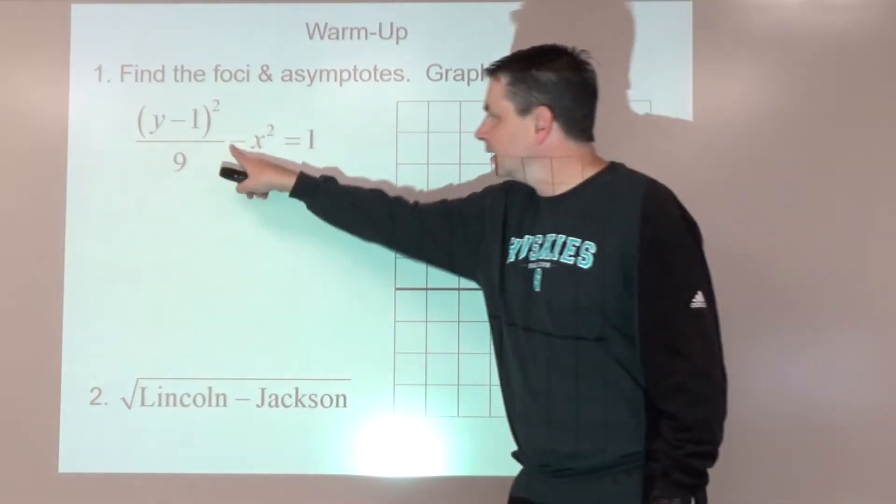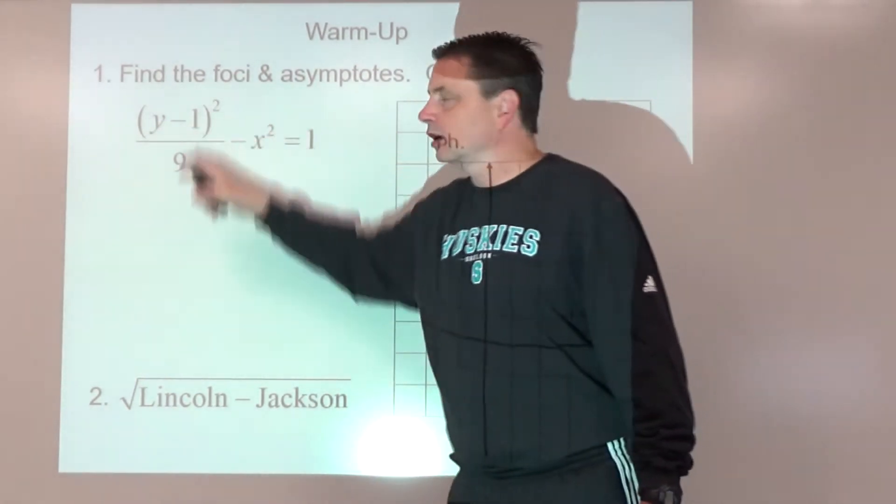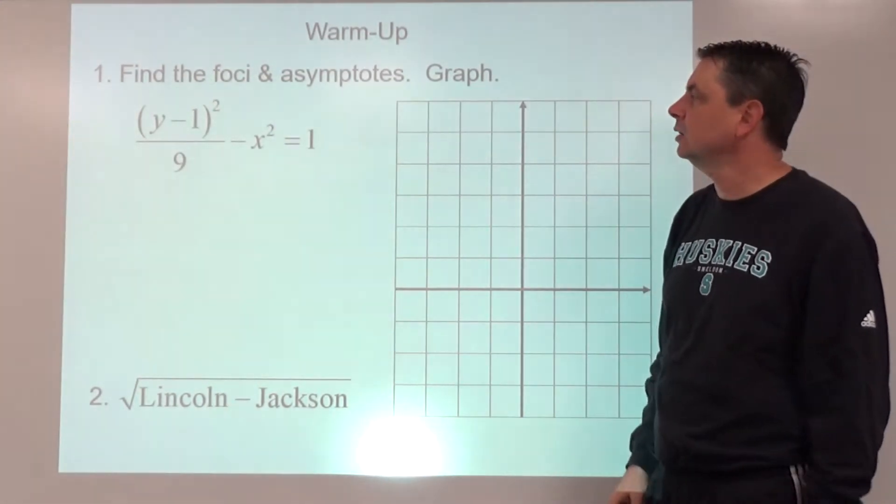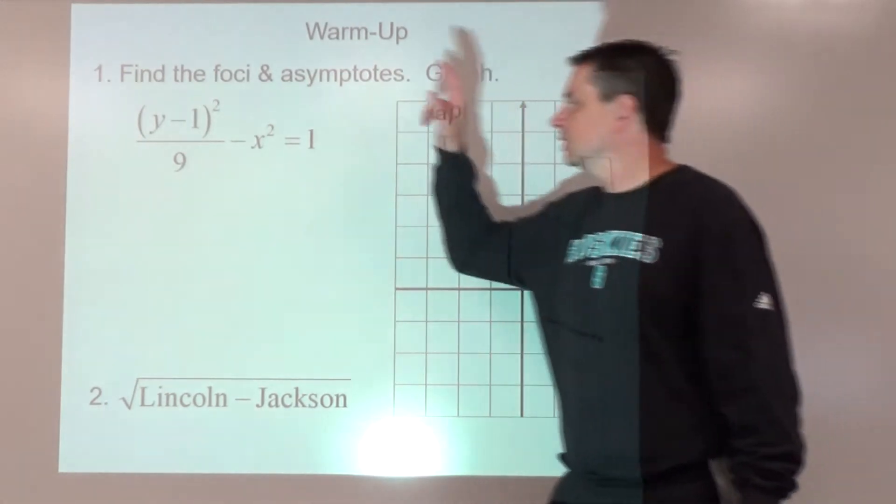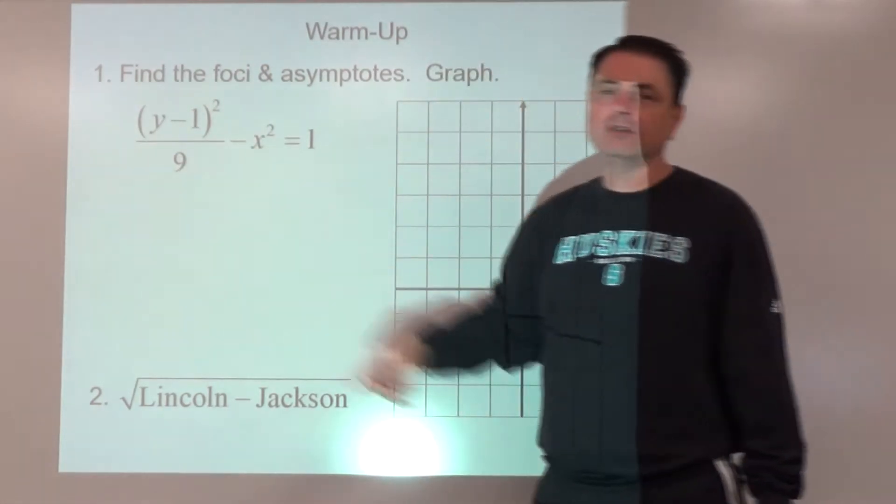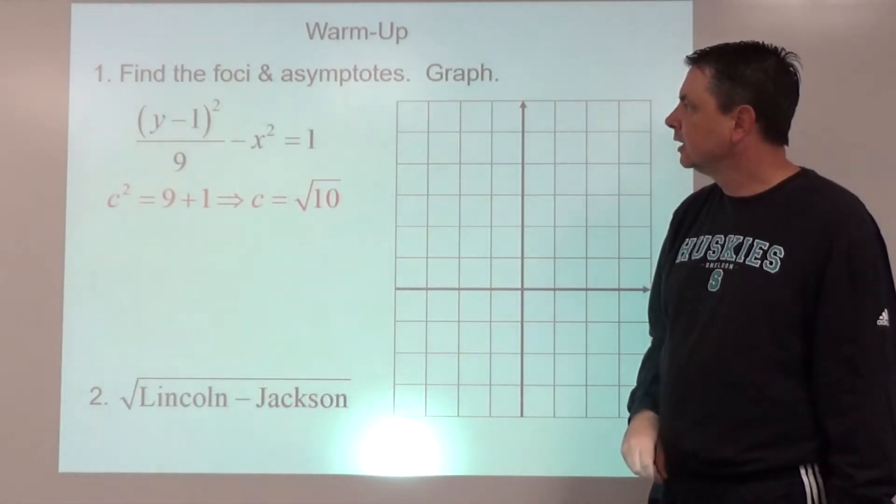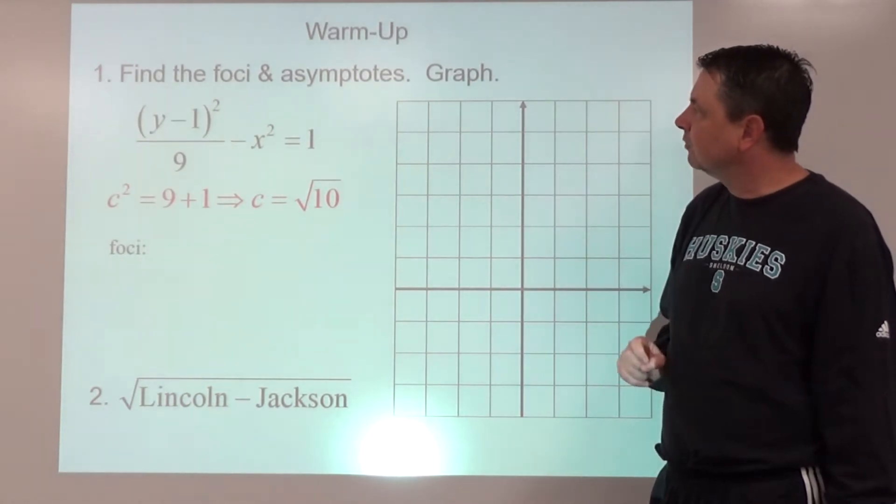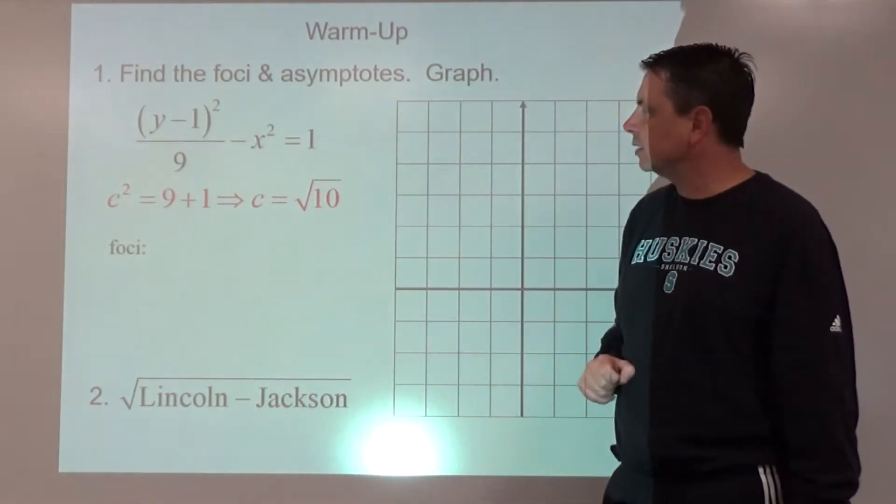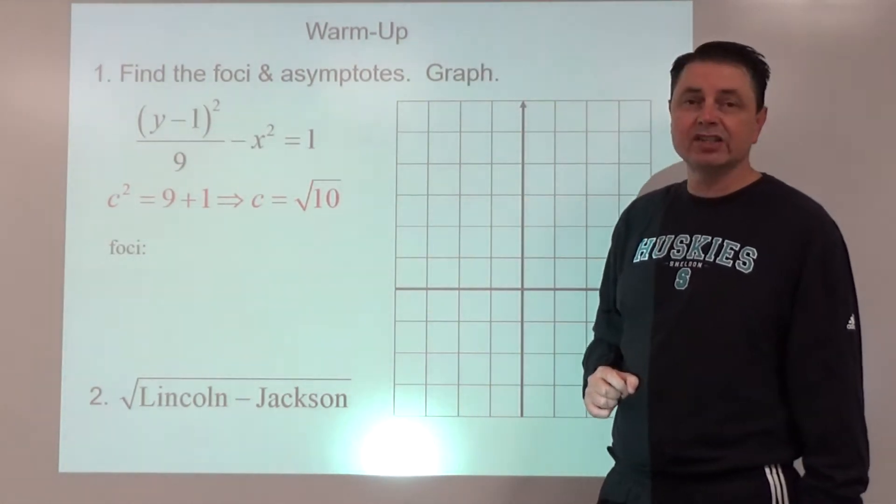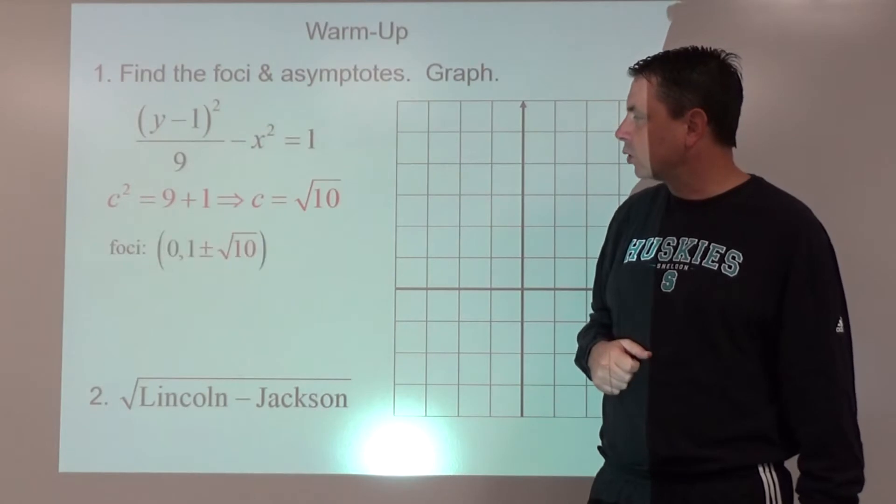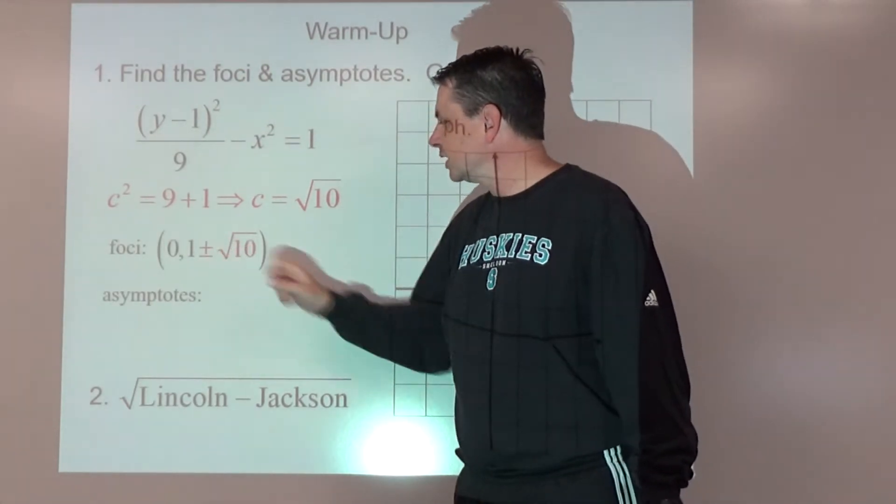Number one, we've got a hyperbola. Y comes first and is the positive one, so it's going to be vertical, opening up and down. The center is going to be (0,1), and then A is going to be 3, and B for a box point is going to be 1. For finding foci, asymptotes, and graph, foci c² = a² + b², so c is going to be √10. Since the center is (0,1), we're going to go up and down √10 from the y-coordinate, so (0, 1 ± √10).